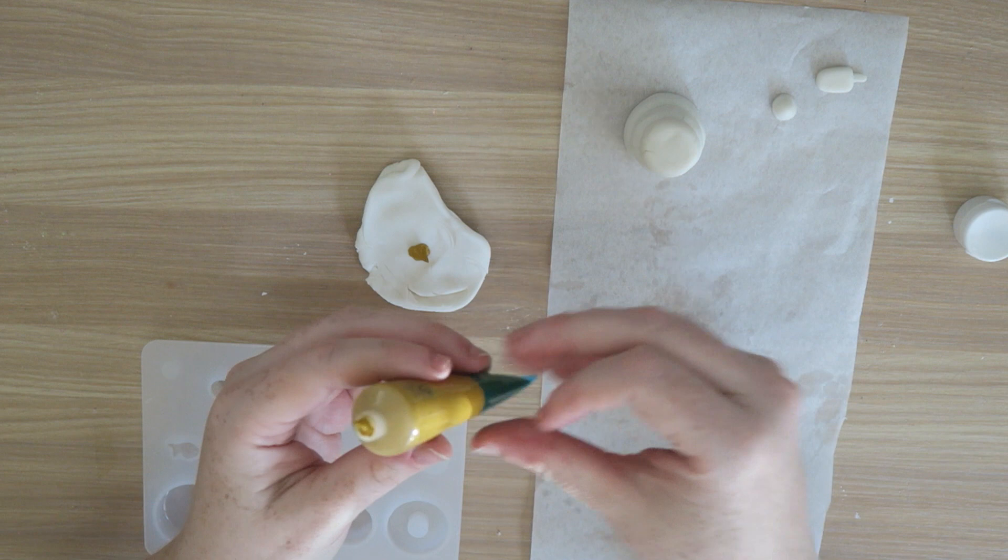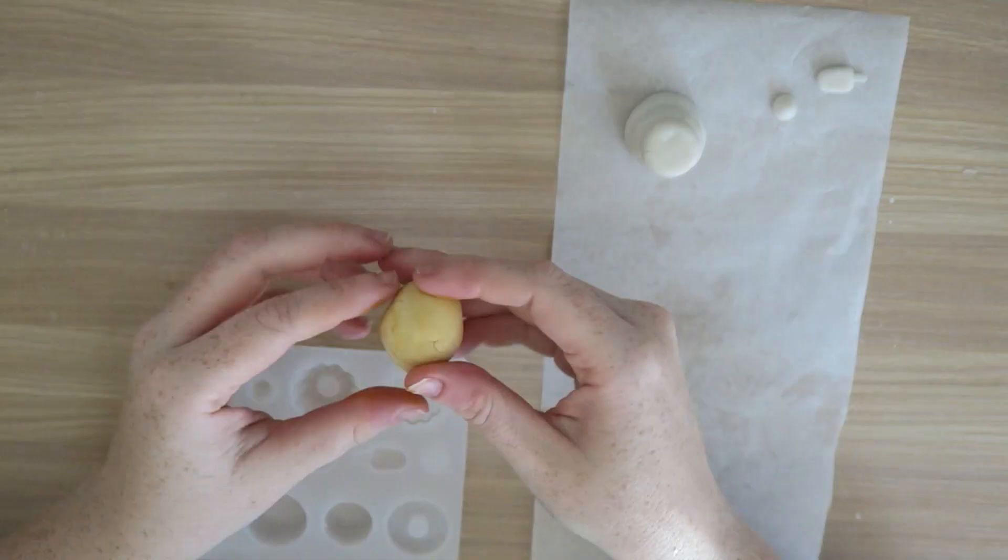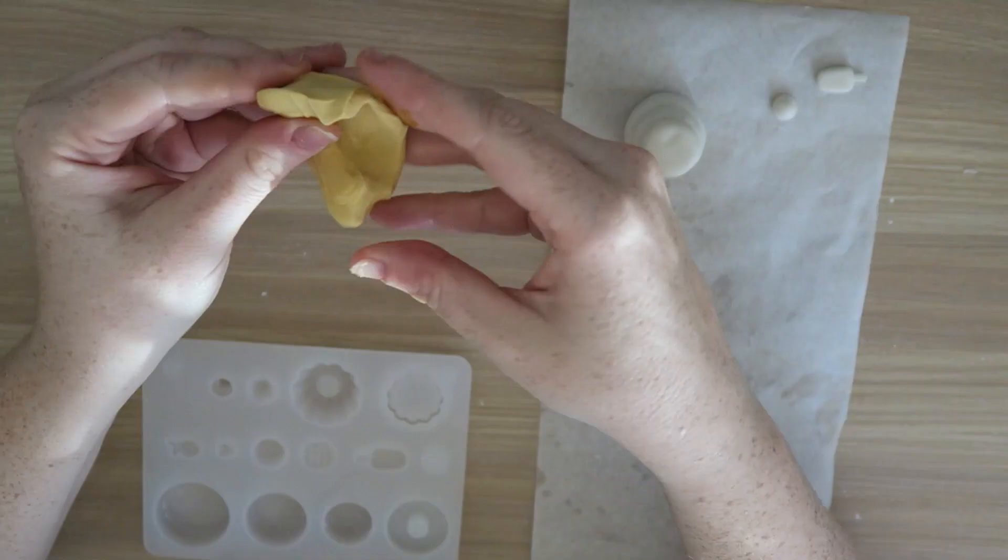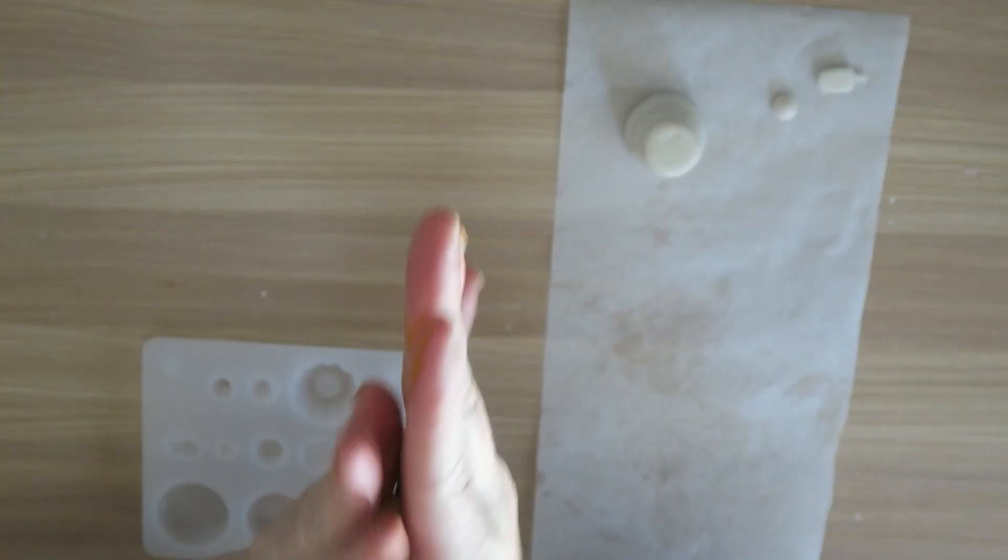You can color the clay using acrylic paint. I just add a dab at a time and if I need to make the color darker I'll add another dab and then you just kind of fold the paint into the clay until it's all the way blended in.